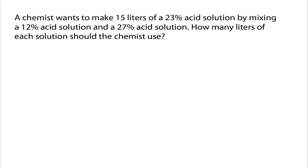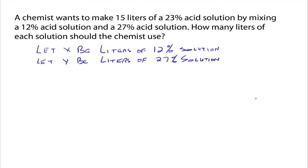A chemist would like to make 15 liters of a 23% acid solution by mixing a 12% acid solution and a 27% acid solution. How many liters of each solution should the chemist use? Again, we set up our system by first defining our variables. Let X be the number of liters of 12% solution and let Y be the number of liters of the 27% solution. We know we want to make a total of 15 liters, so X plus Y has to equal 15.